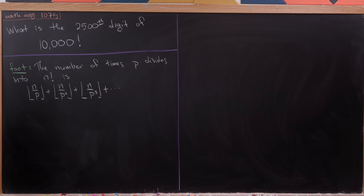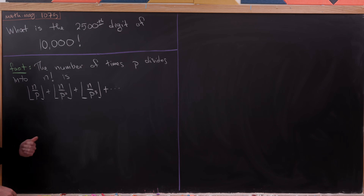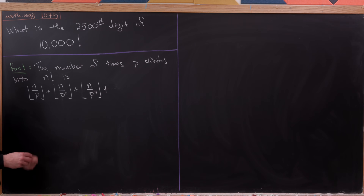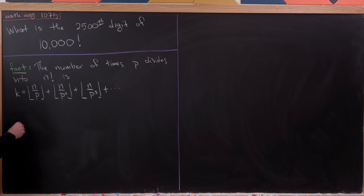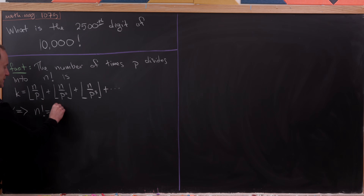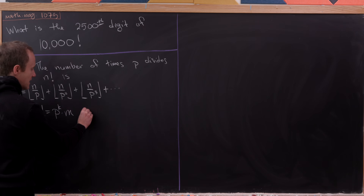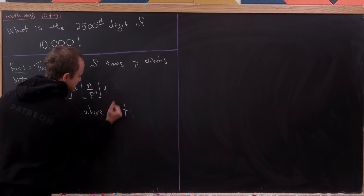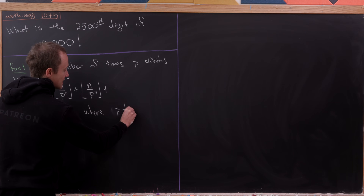You generally write this as an infinite sum, but in fact it always truncates to a finite sum. That's because this power of p in the denominator will always eventually be bigger than n, and thus you'll be taking the floor of a number less than one. If we set all of this equal to k, we can write n factorial as p to the k times some number m, where p does not divide m.